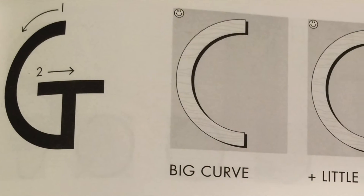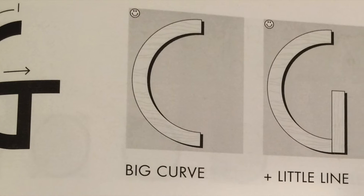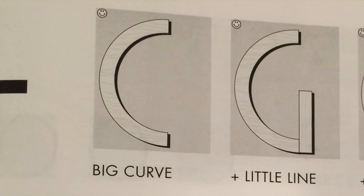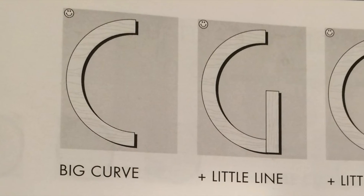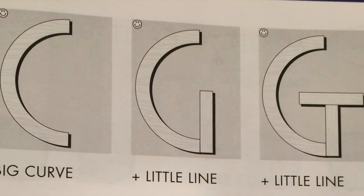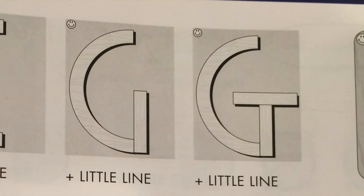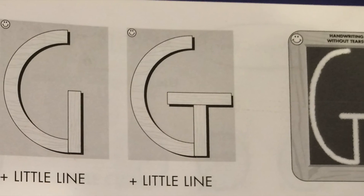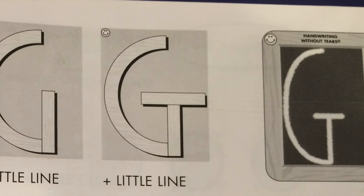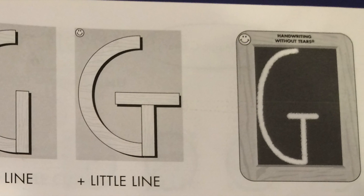Capital G: start at the top center, big curve to the bottom, little line up, little line across. Capital G, uppercase G.